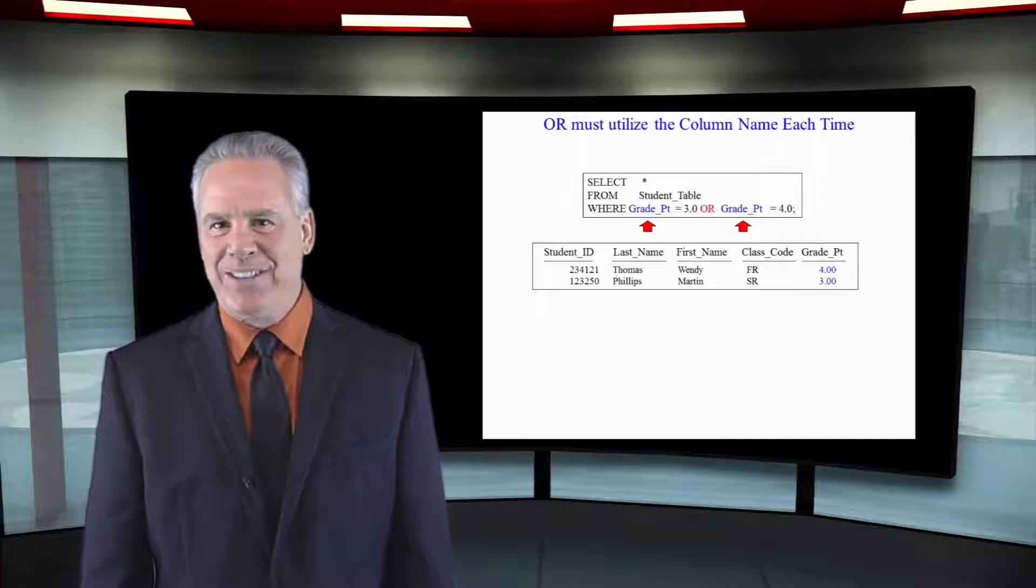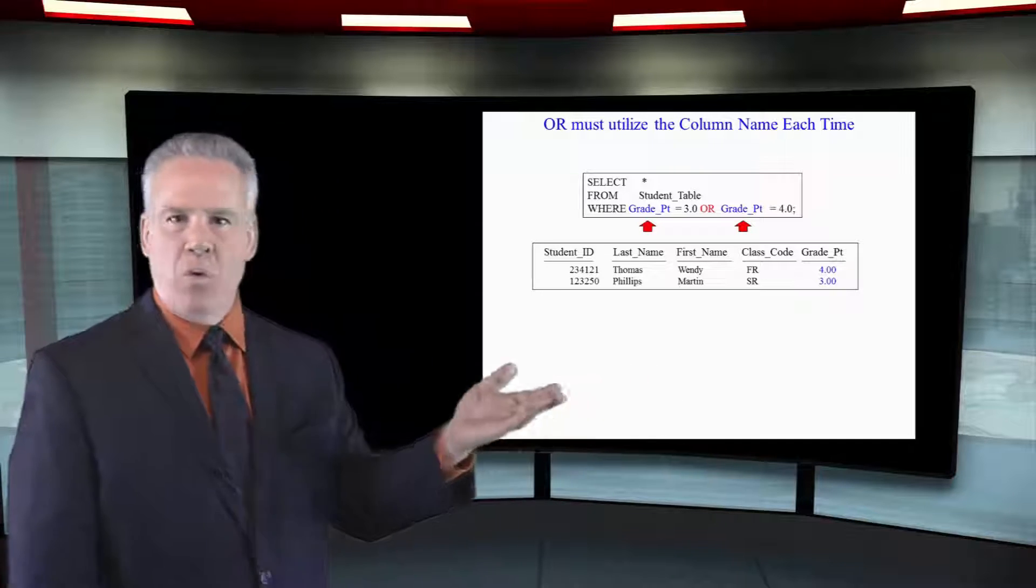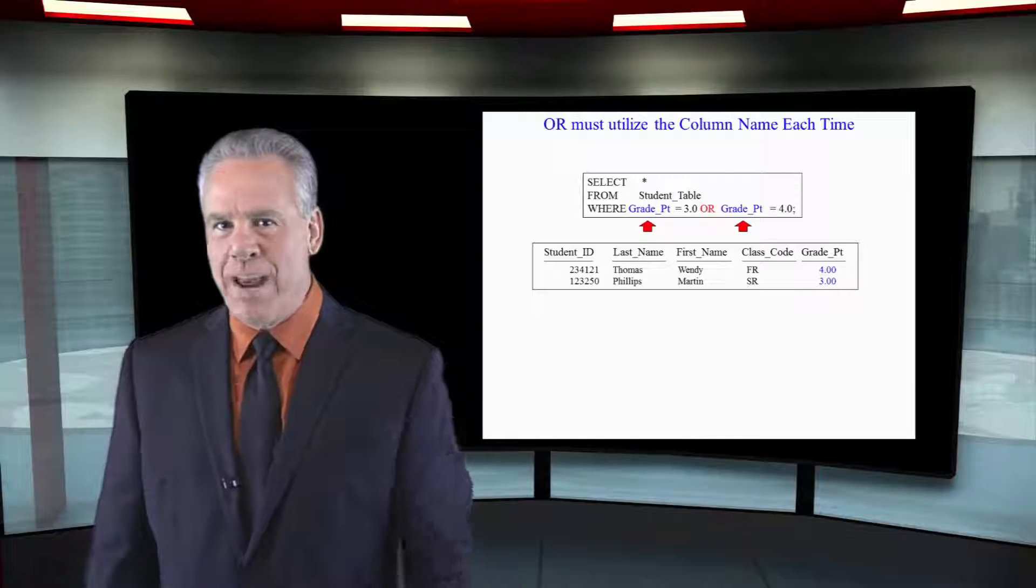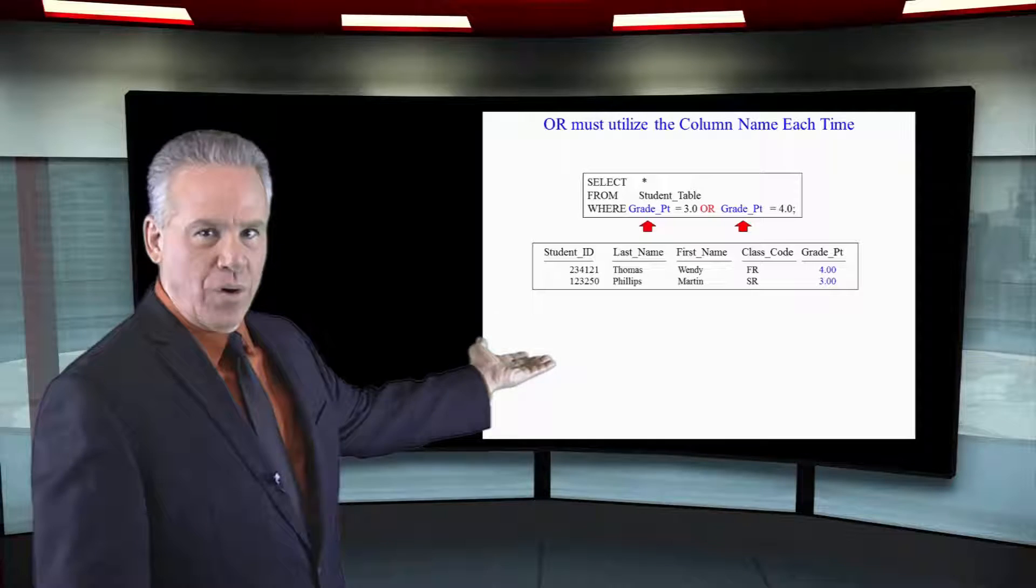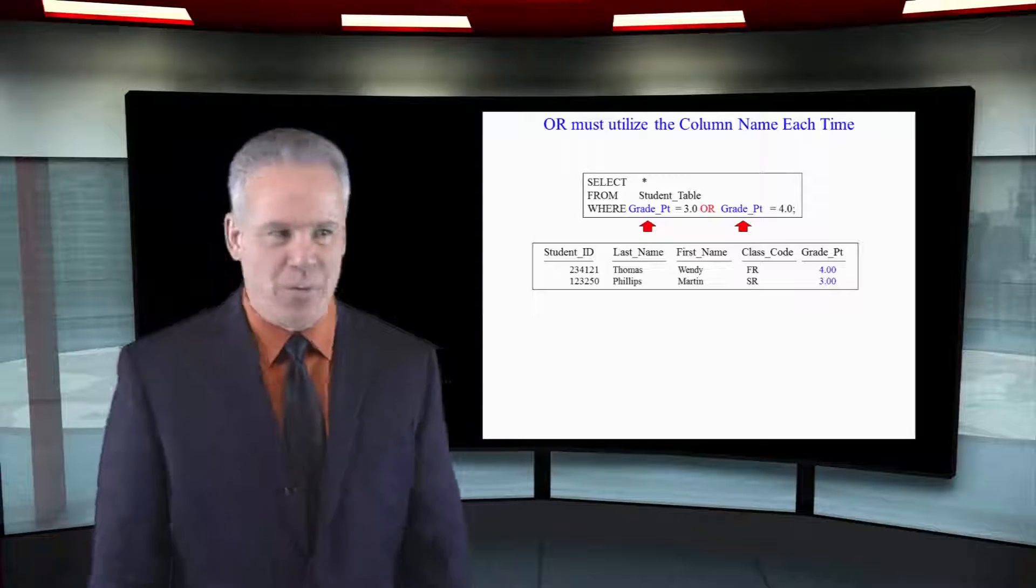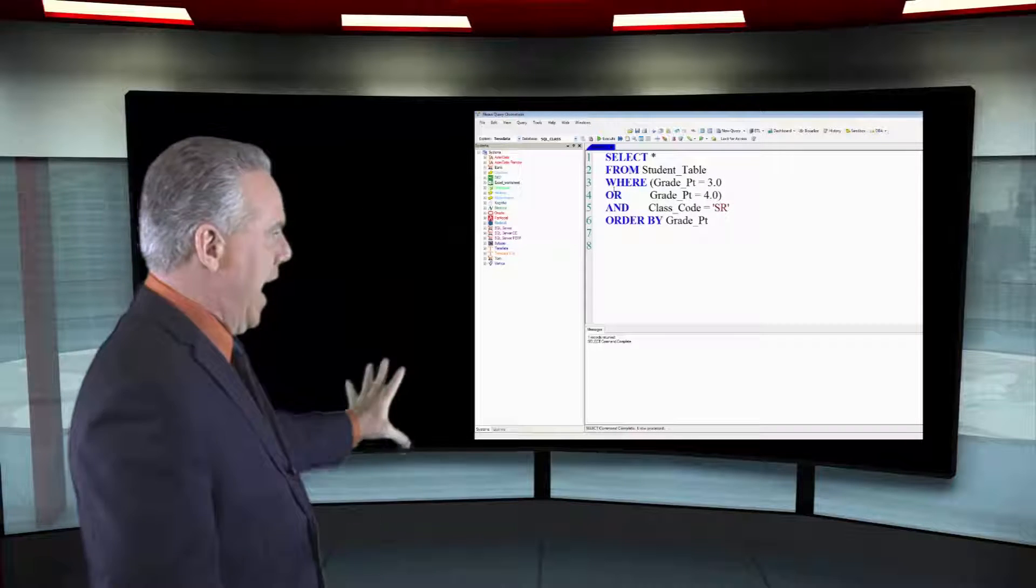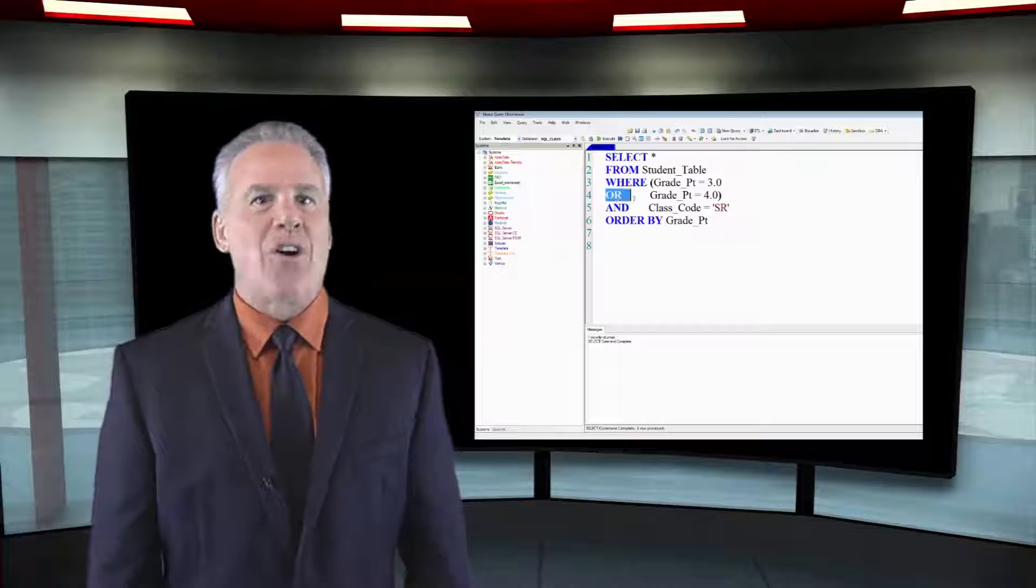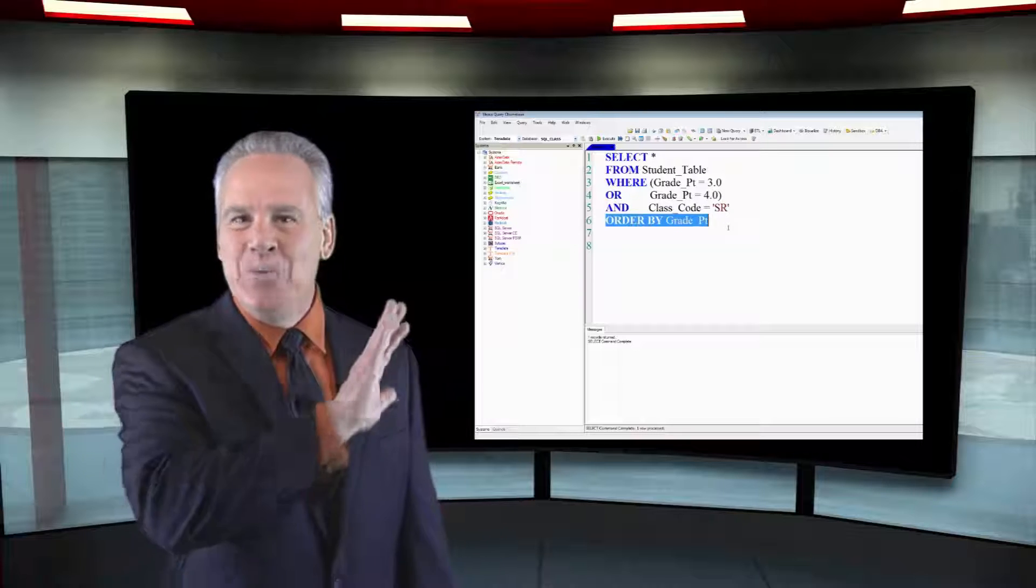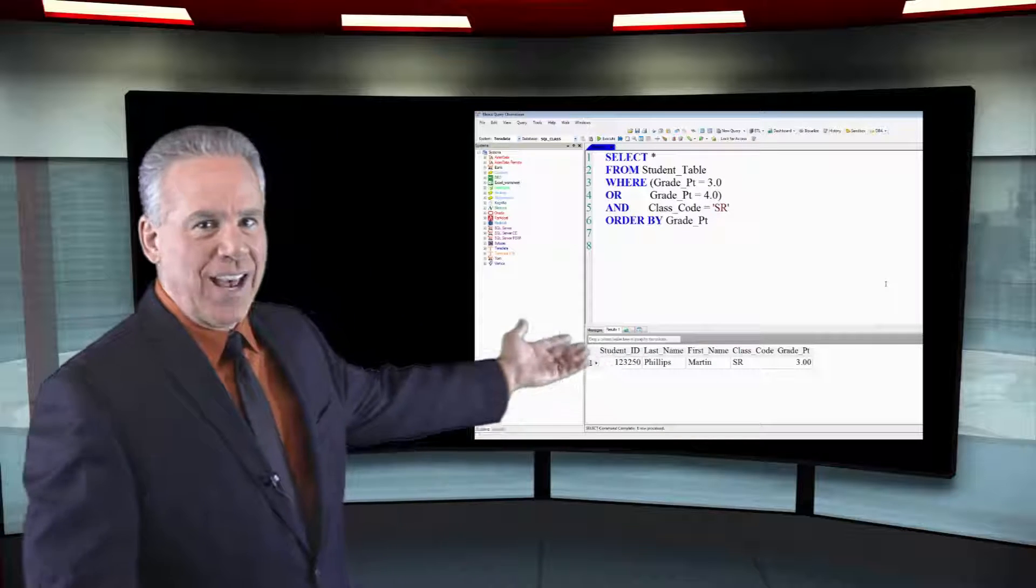Here's the perfect SQL. Well, maybe not perfect. Where grade point equals 3.0 or grade point equals 4.0. I would probably format that and put that OR word on the next line. And that's the way I like to do my keywords. SELECT, FROM, WHERE, OR, AND, ORDER BY. All my keywords usually start on the direct left, but it doesn't make any difference. You can write it in one line if you want. But this is proper syntax.